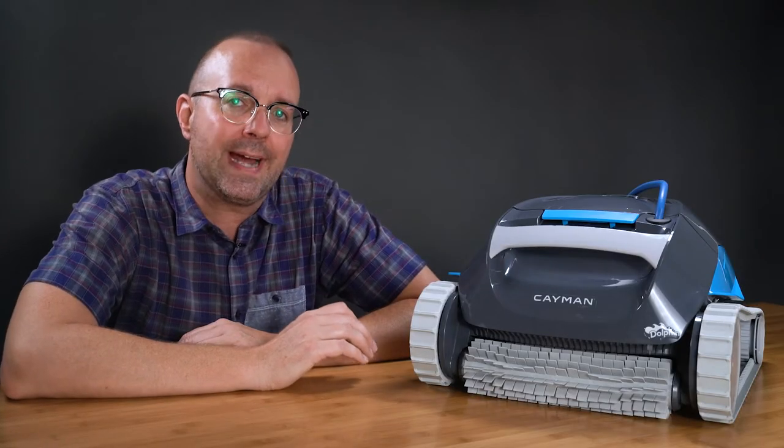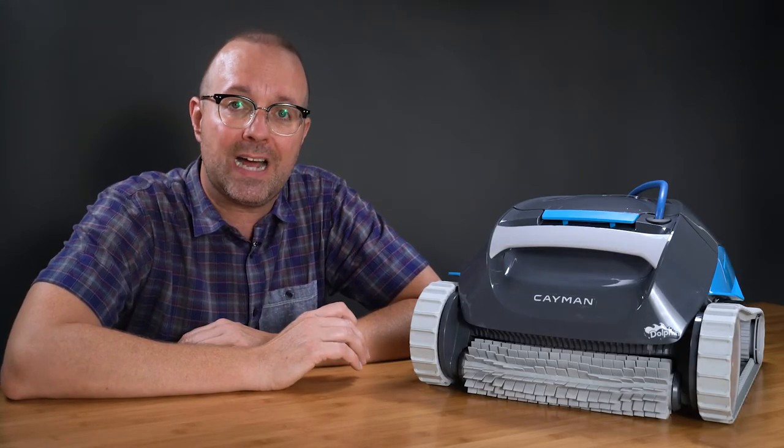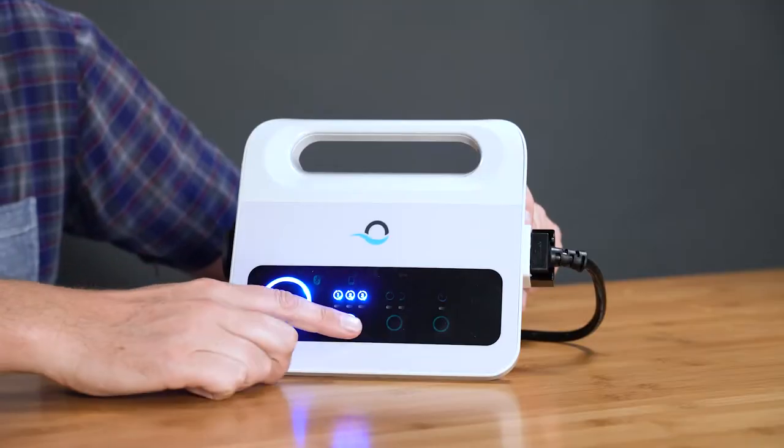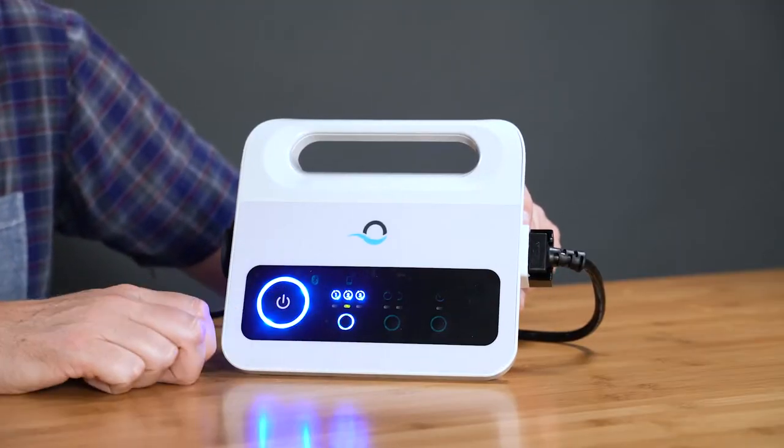But if you want a truly hands-off cleaner, a programmable timer is a must. With this, you only have to go outside once a week to set the robot's schedule for the week, which can either be every day, every two days, or every three days.